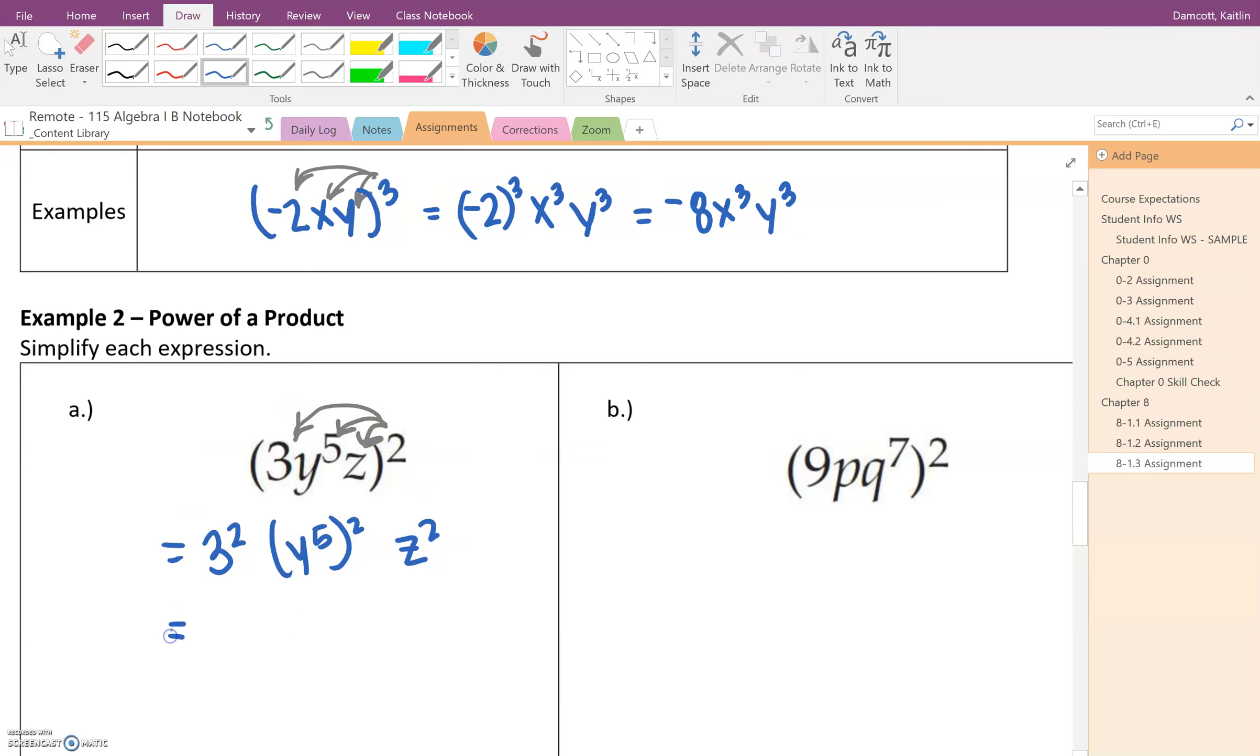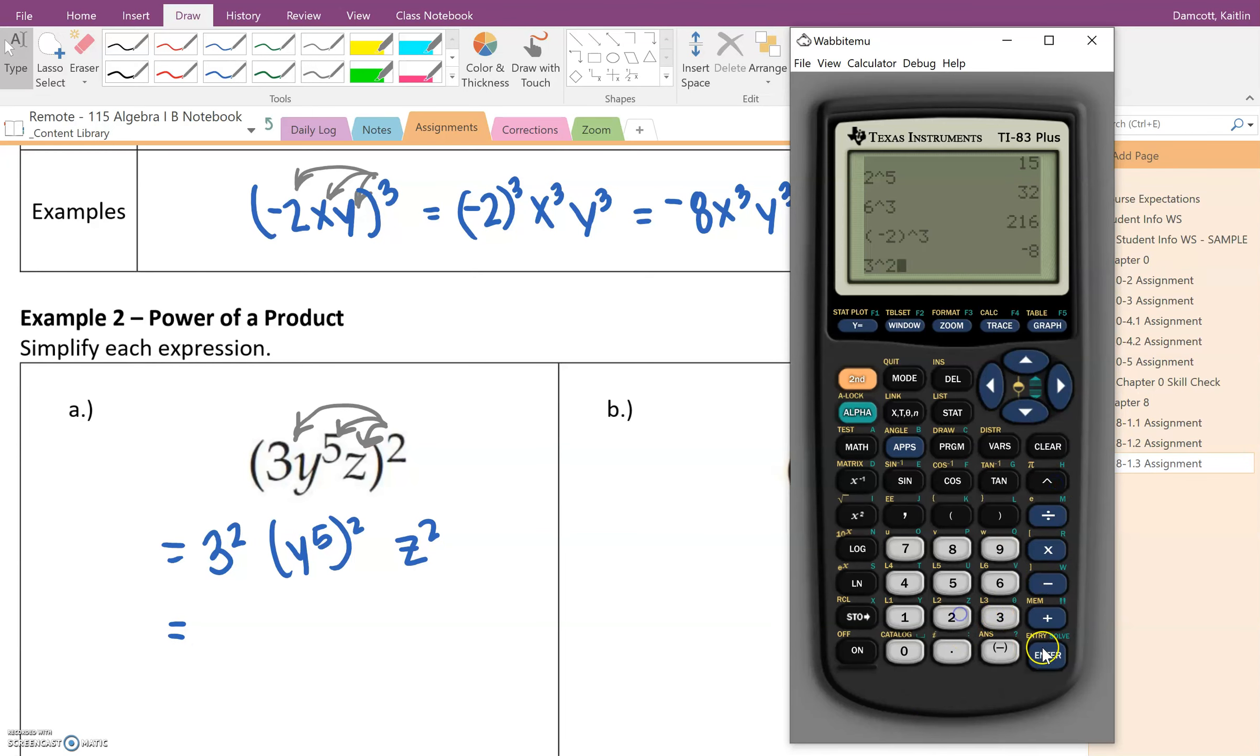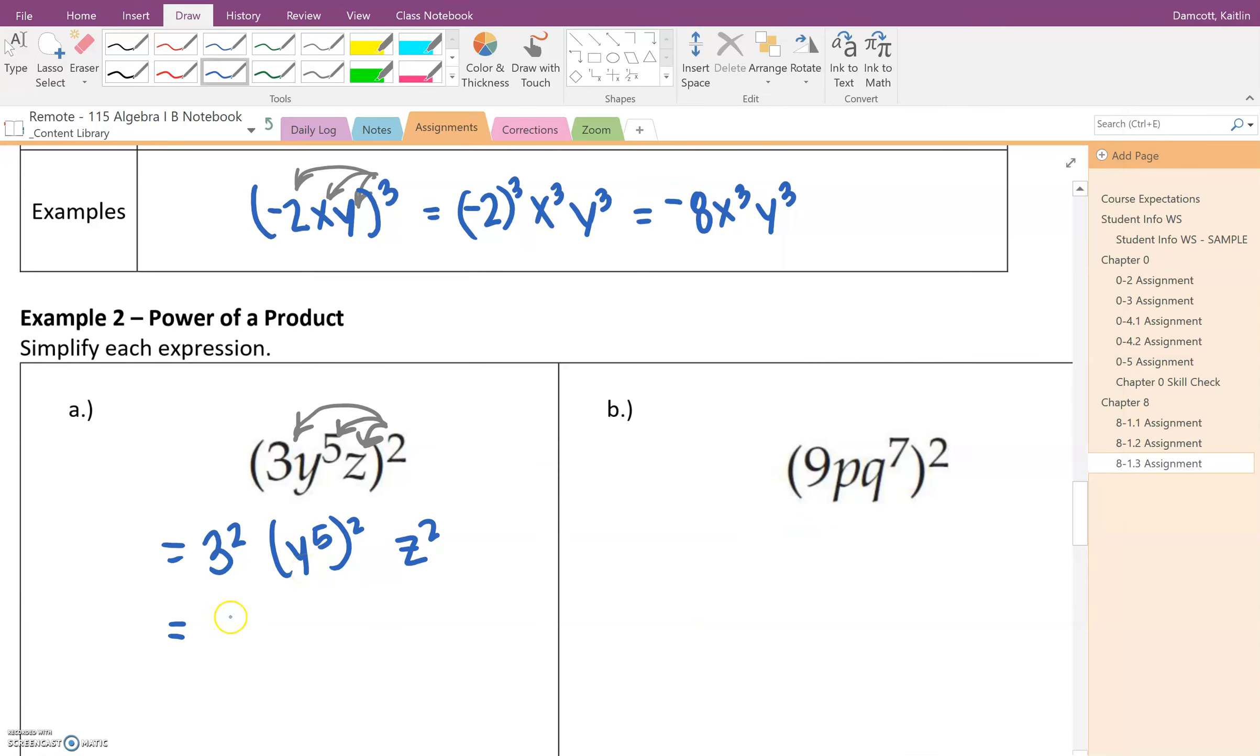So all I did was distribute that exponent to each of the factors. From here we have to do a little bit of simplifying. So 3 squared, if you wanted to put that into your calculator, 3 squared is 9, or you could just think of it as 3 times 3 is 9. And then now we're using this idea of raising a power to a power like what we went over in the first video with that example 1. So when you have a power raised to a power, hopefully you remember that this is when you are multiplying your exponents. So 5 times 2 is going to give you 10. So we've got y to the tenth.